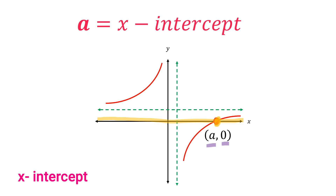The x-intercept is the 'a' in the ordered pair (a, 0). For example, if the ordered pair is (2, 0), then the x-intercept in this case is positive 2.